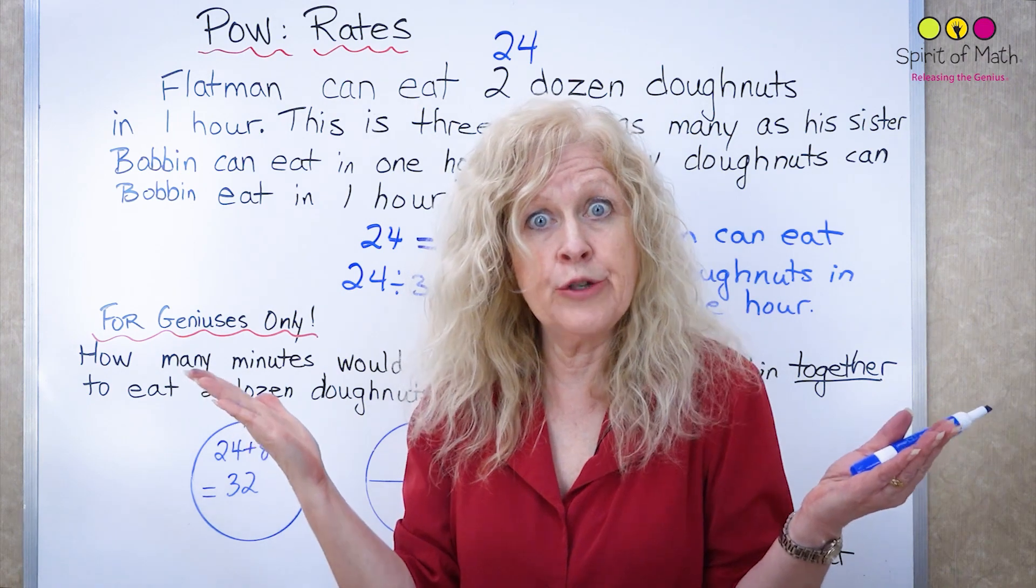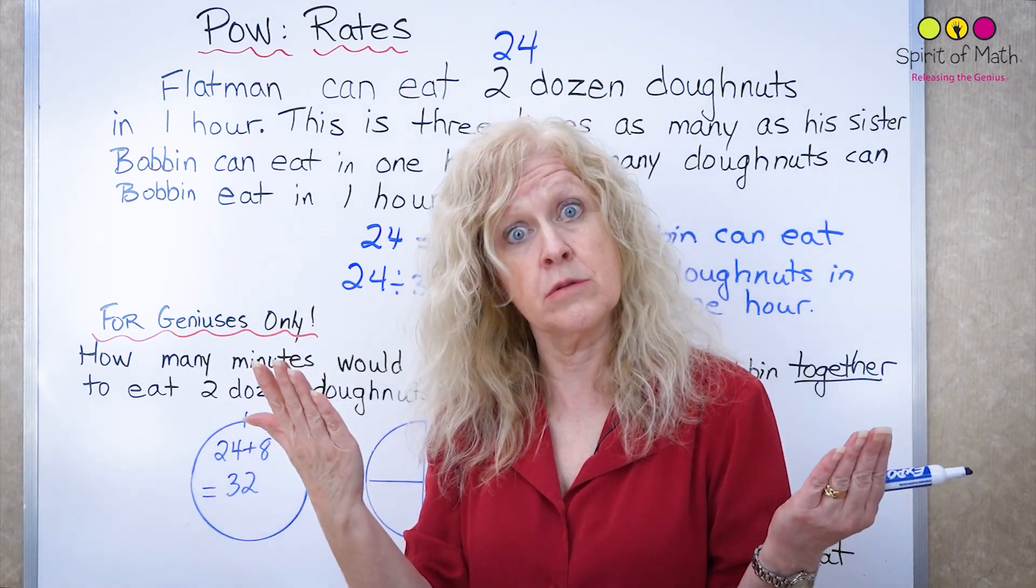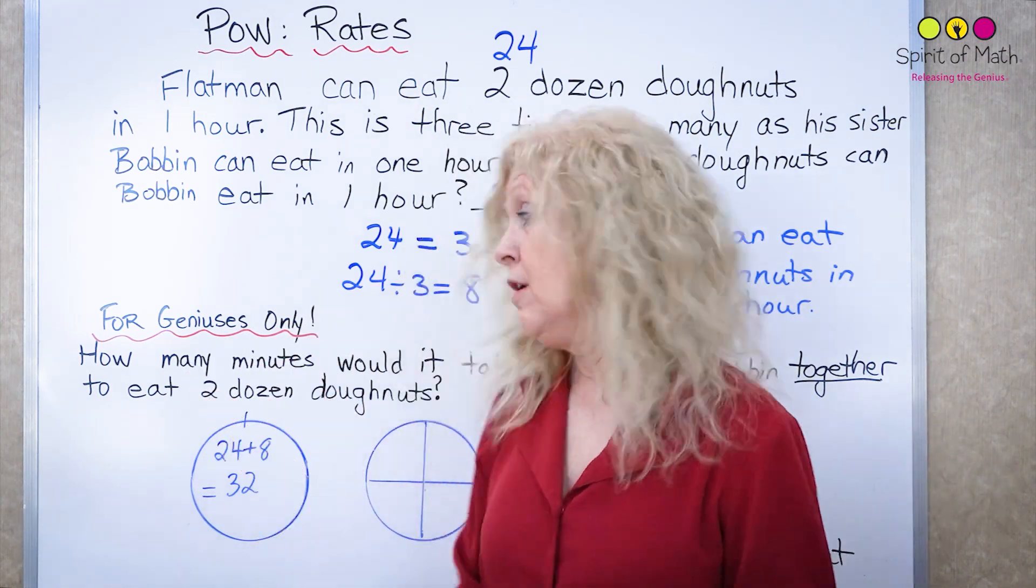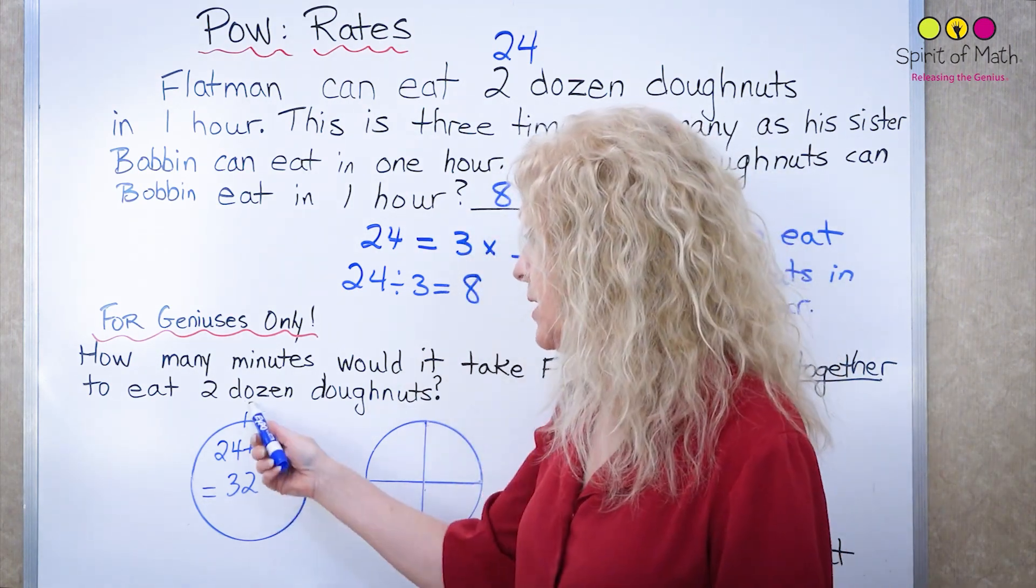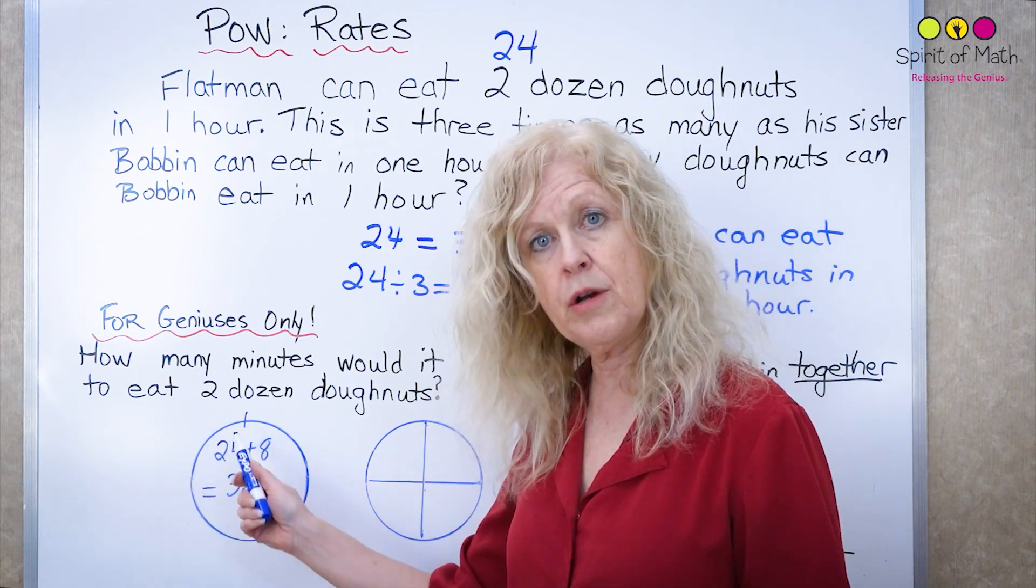Okay that's too many. We only want two dozen which is 24 doughnuts. That's what the question asked for. So if we only want two dozen let's break this down. Well we know they can do 32 together in one hour.